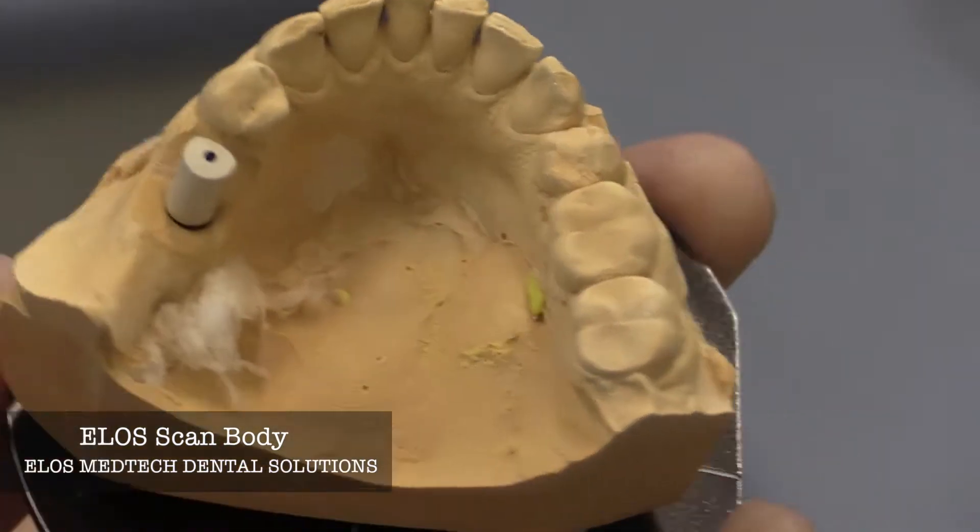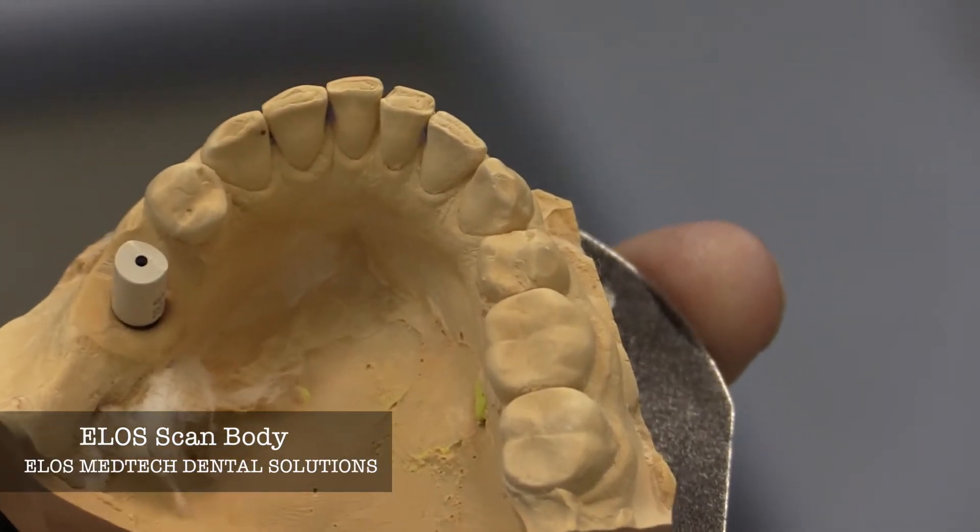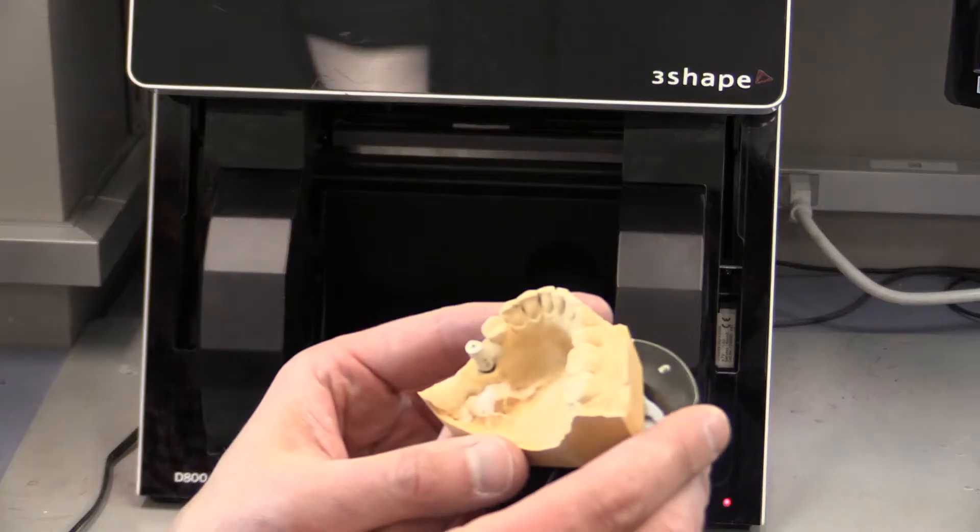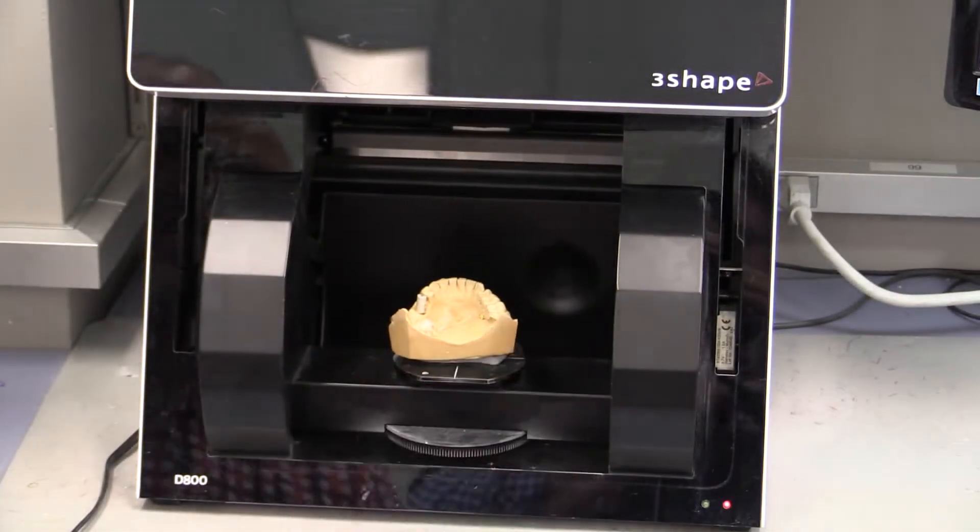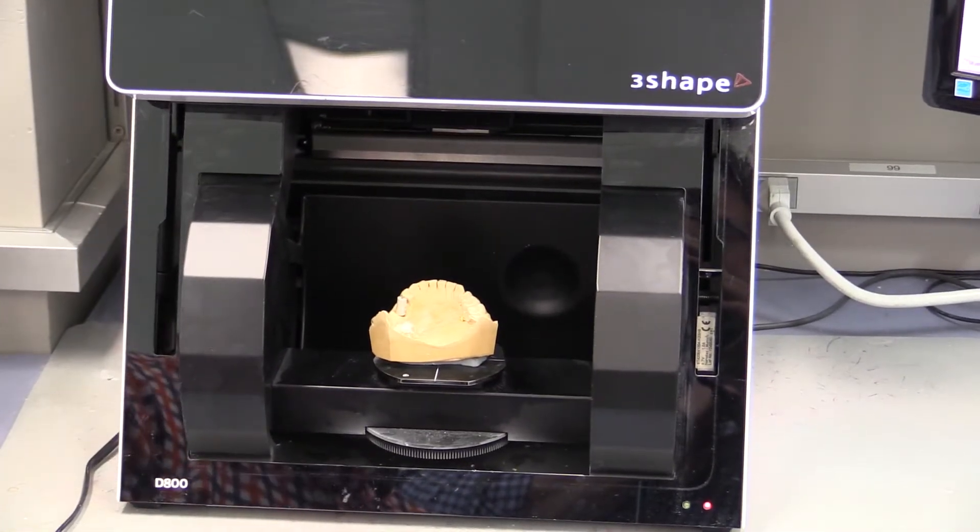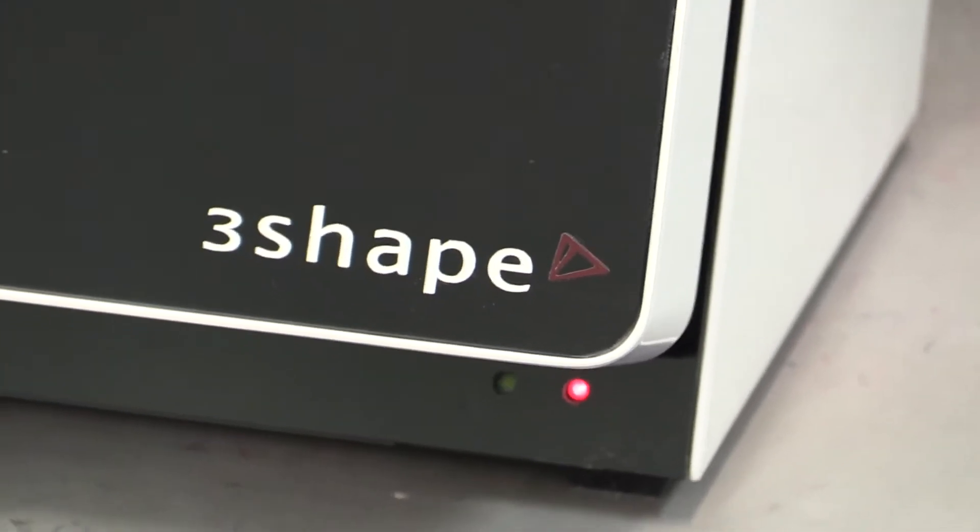And you'll see that we're able to put an ELO scan body on this analog model and then digitize this. So by putting it in the three-shape desktop scanner, the lab can then take this and create a file. It's going to be used to fabricate a crown.